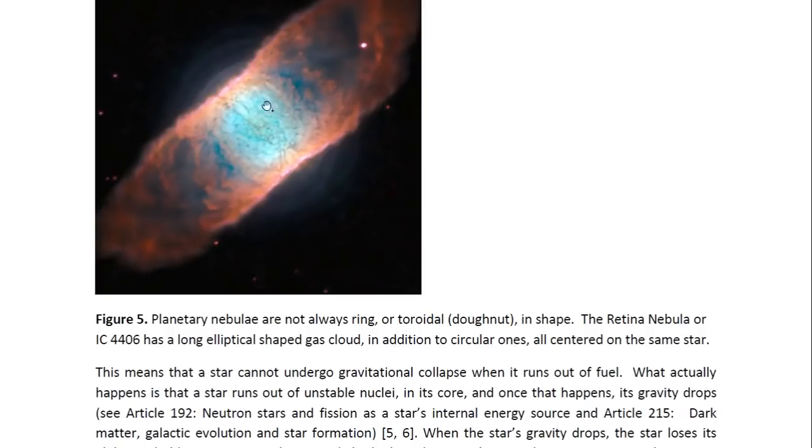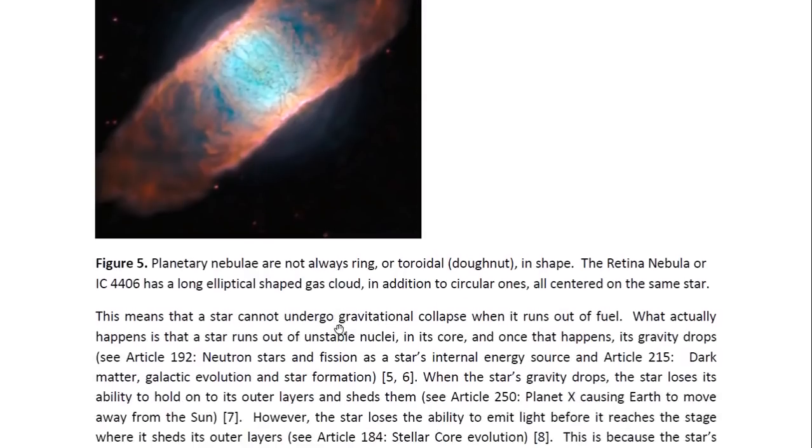And here we see another planetary nebula. These are not always in the ring or toroidal shape. This one, which is called the retina nebula or IC 4406, has this elliptical shaped cloud that also seems to be emanating from the central star. So everything here, there are rings that are more visible behind this structure in front, or brighter structure, but they are rings that are also centered on that star.